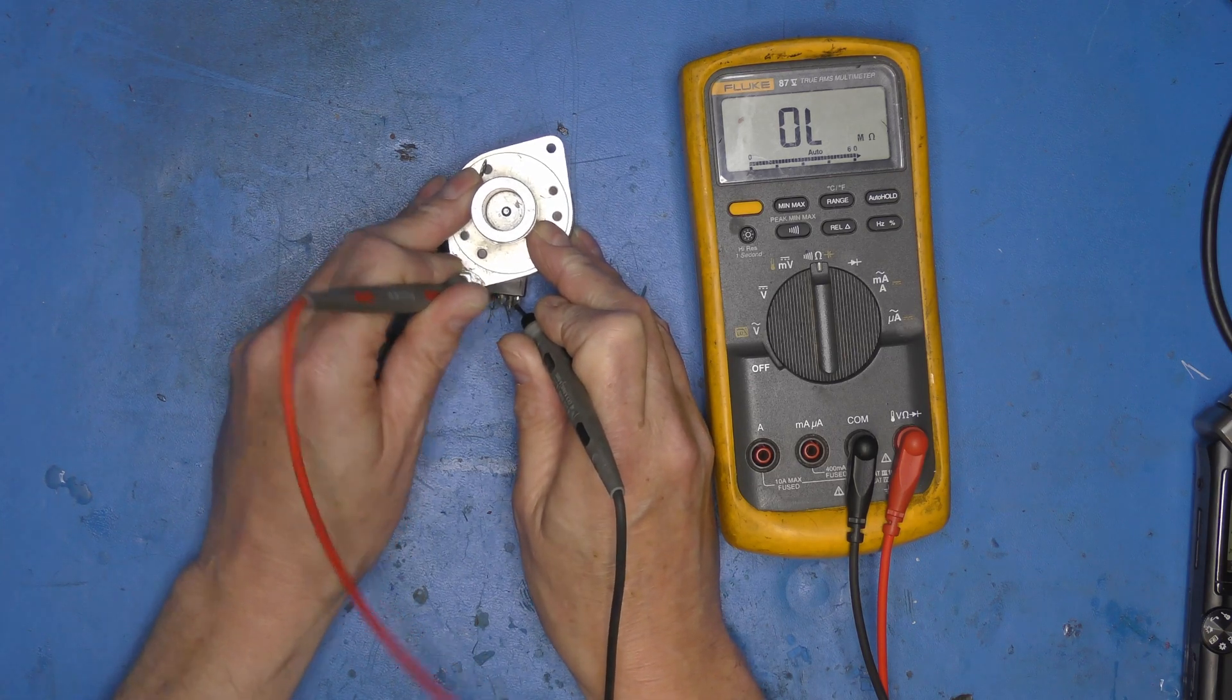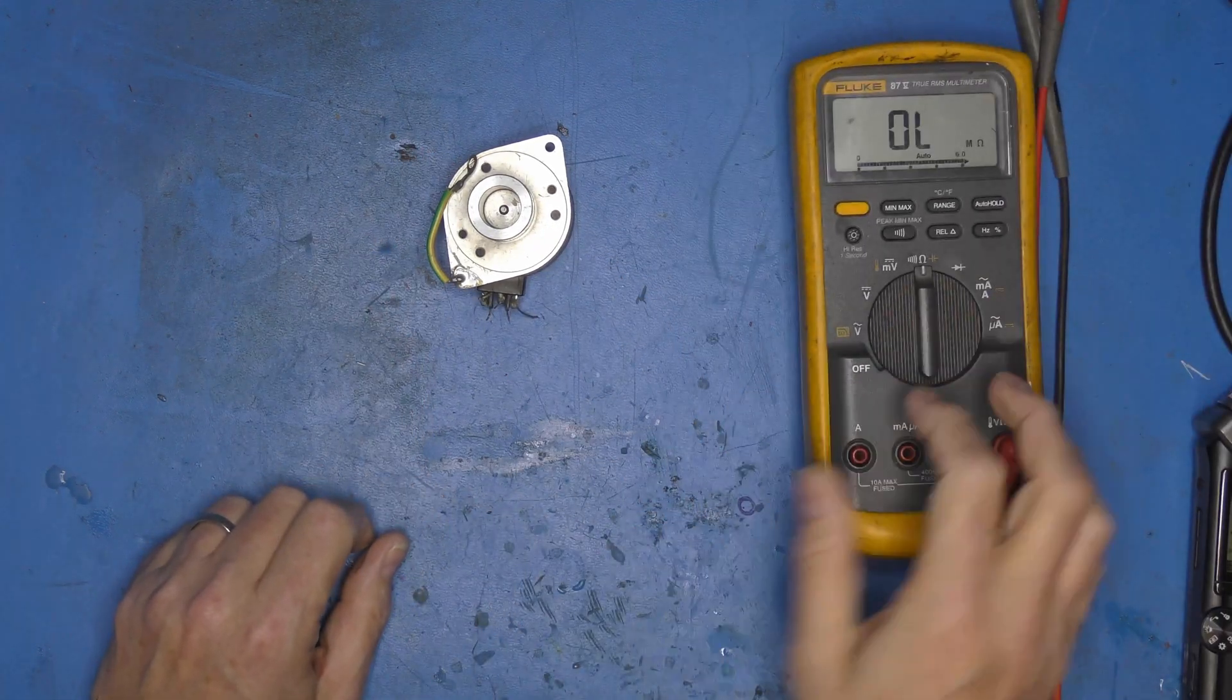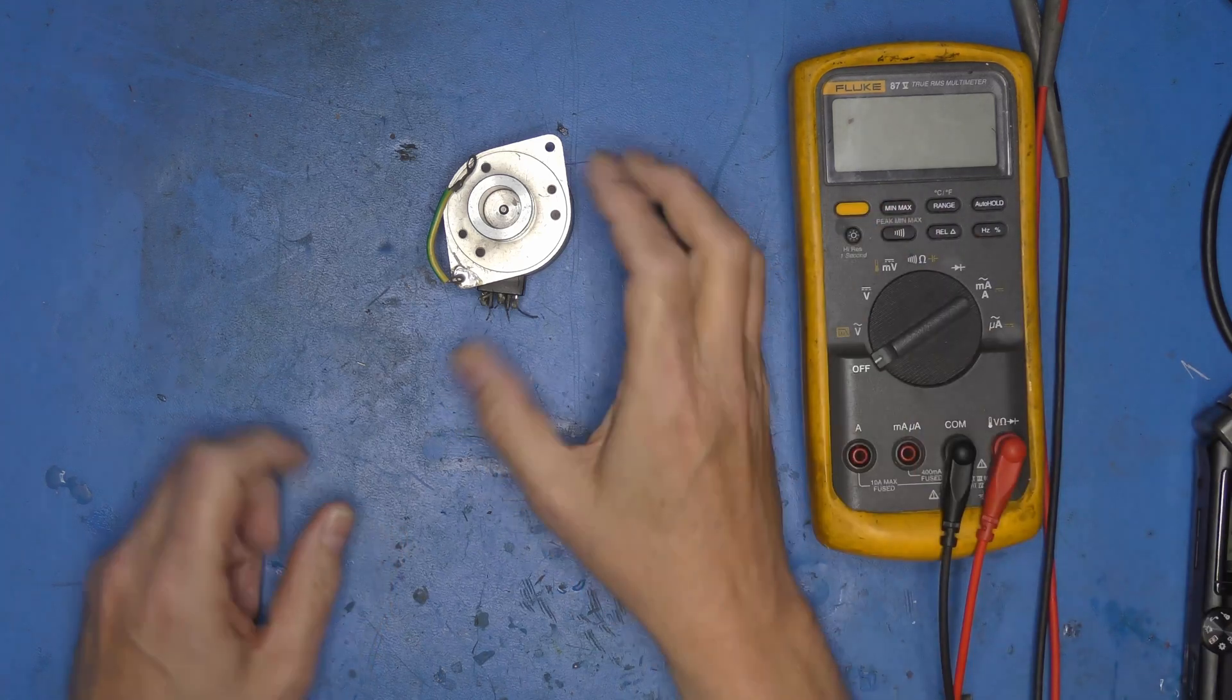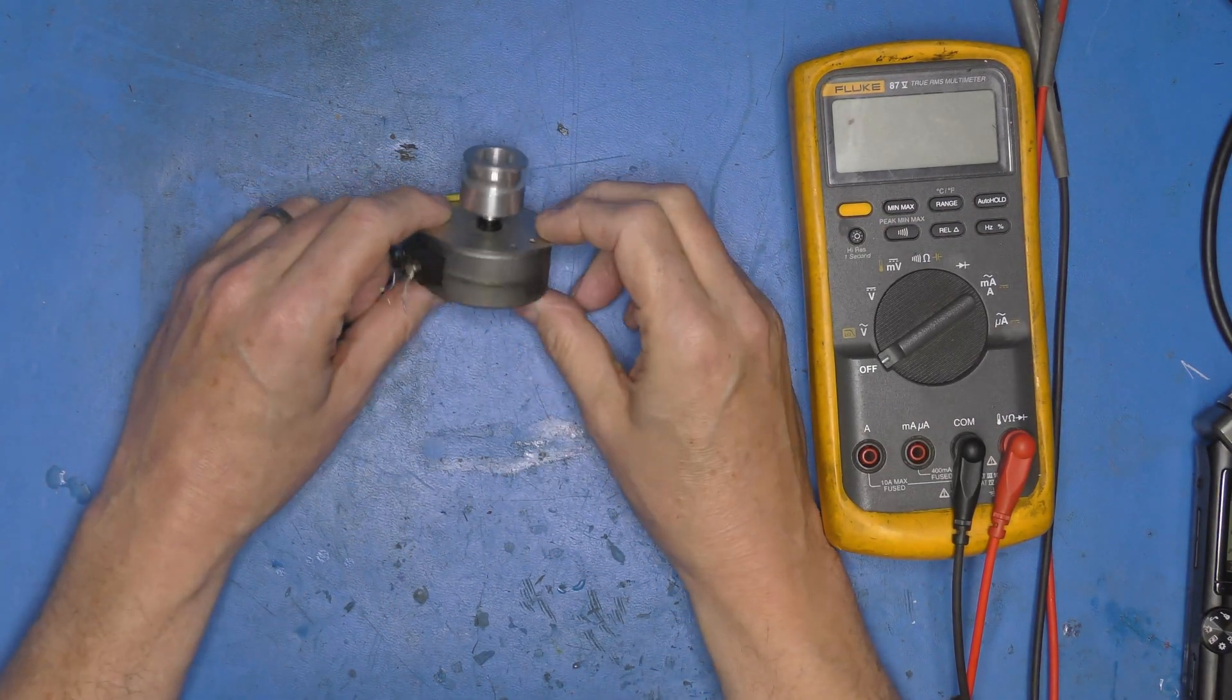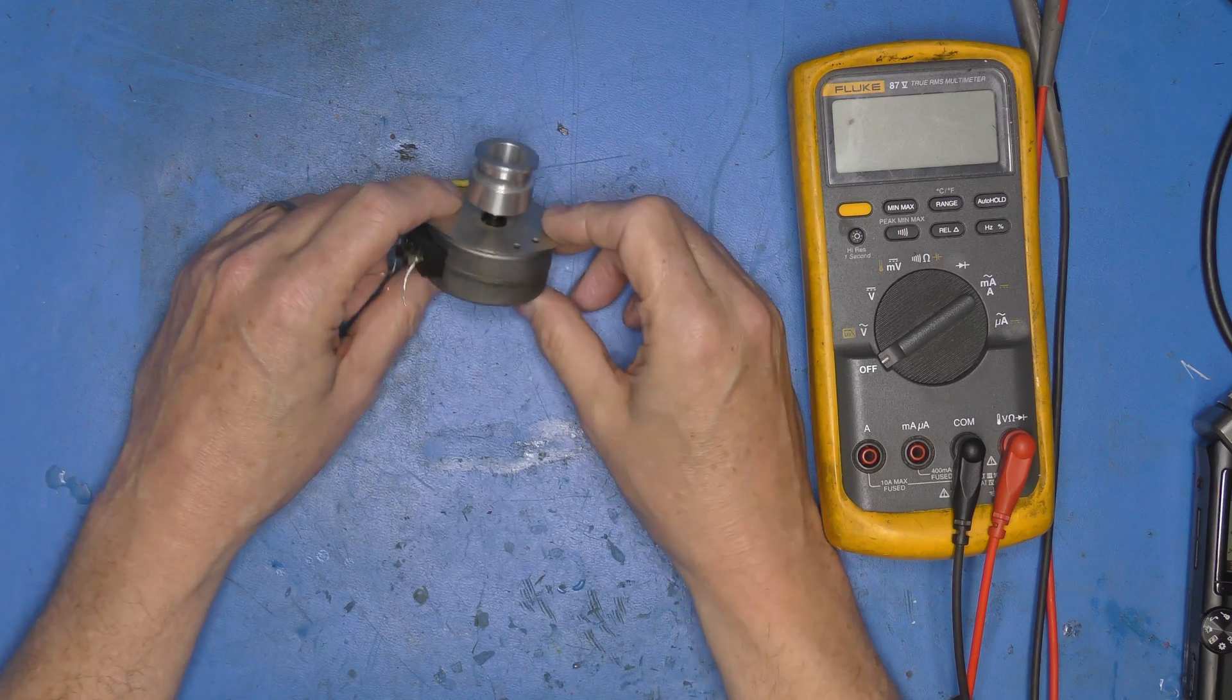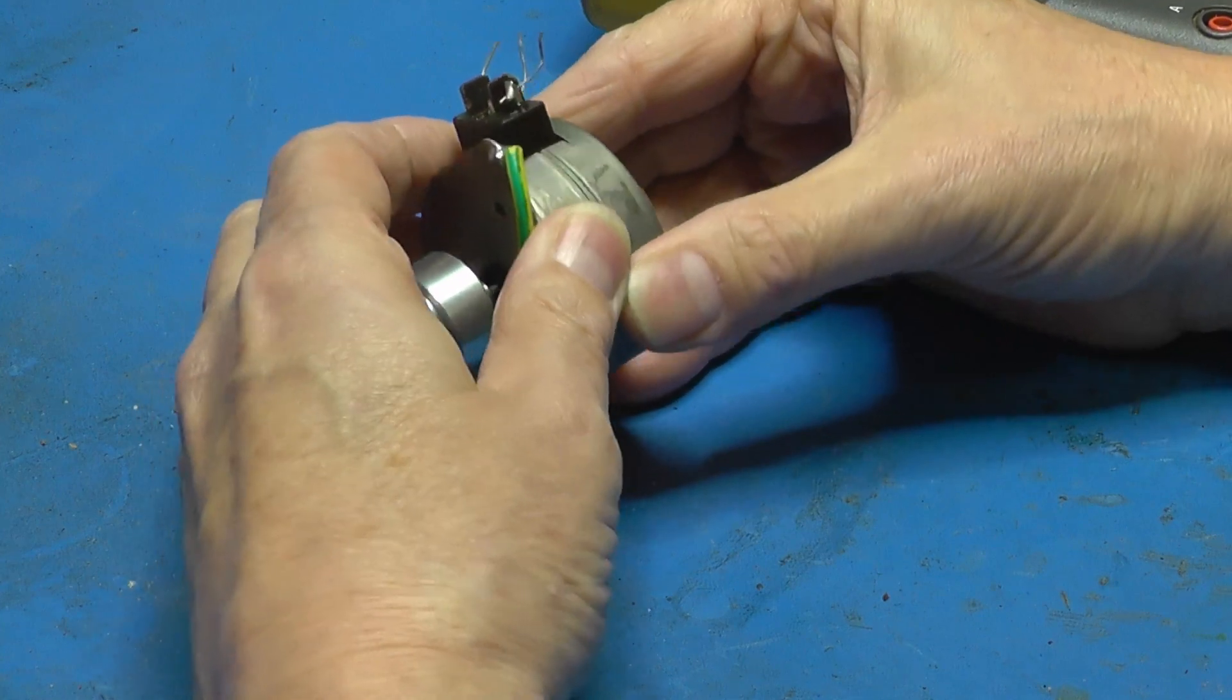Because this is what happens. As you can see, this winding, it's all right, it's about 2.4k. This winding on this side has gone open, so that motor is now scrap. The biggest problem is this motor is no longer available.